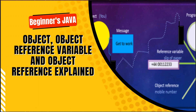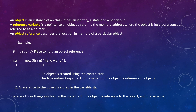This video is about object, object reference variable, and object references. An object is an instance of a class. It has identity, state, and behavior. A reference variable is a pointer to an object by storing the memory address where the object is located. An object reference is the location in memory for a particular object.